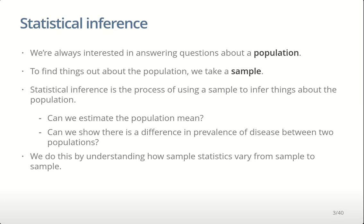The key thing with statistical inference is that we're always interested in answering questions about a population. To answer questions about a population, there are two ways you can go about it. The first thing you could do is go to the population and ask that question directly — sample all individuals in the population and you'll know the answer. But in general, that's very expensive, and in some cases simply impossible from a practical perspective. So instead, we tend to take a sample.